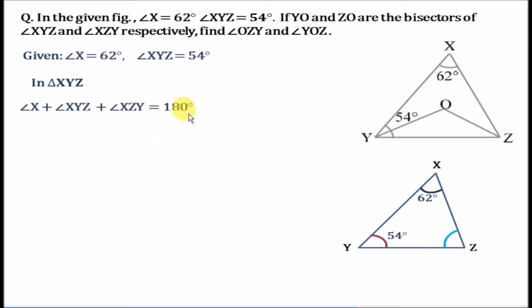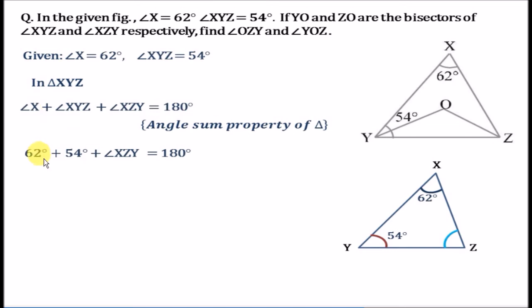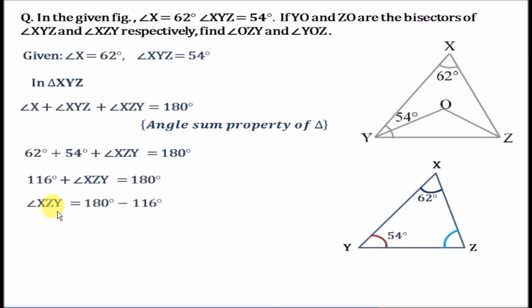In triangle XYZ, angle X plus angle XYZ plus angle XZY equals 180 degrees by angle sum property. Putting the known values: 62 plus 54 plus angle XZY equals 180. So 116 plus angle XZY equals 180, giving angle XZY equals 64 degrees. We now have all three interior angles of the larger triangle XYZ.